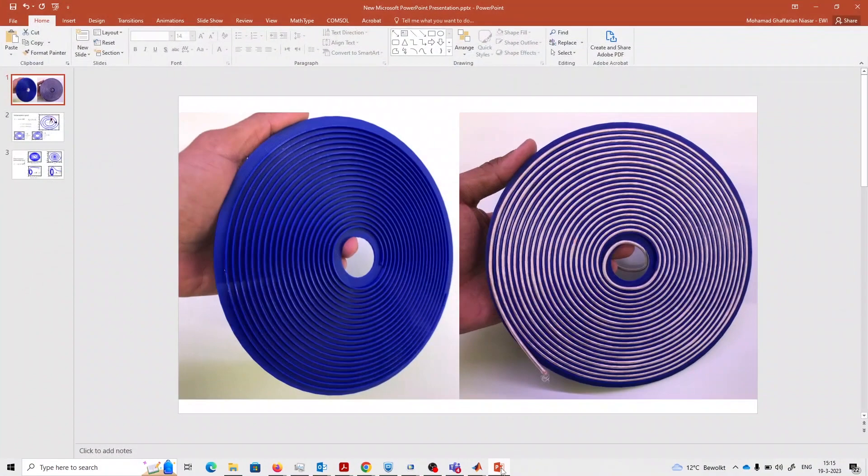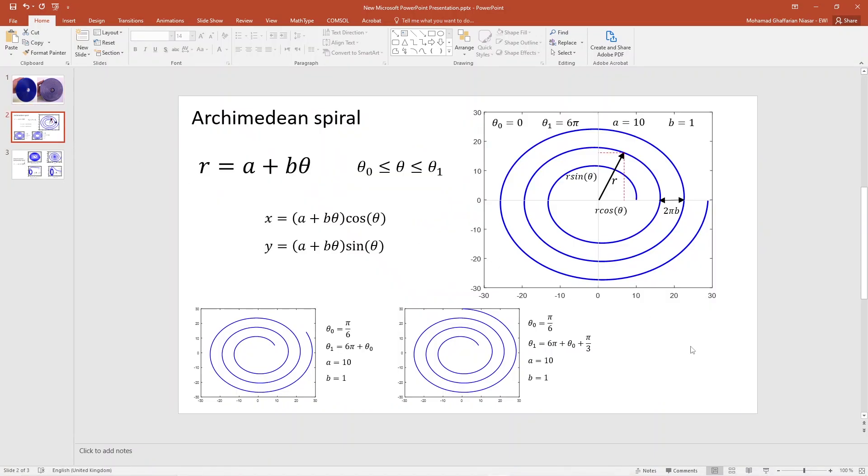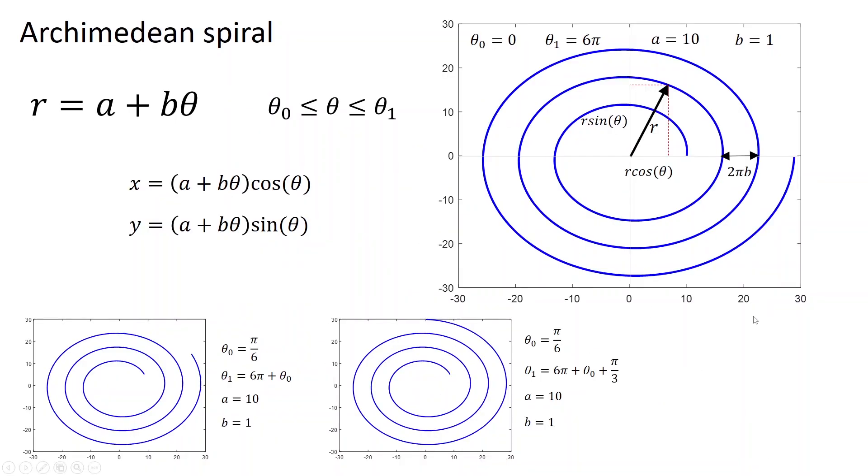I summarized the information in those web pages in these slides. The very famous spiral is called Archimedean spiral. And the equation of the spiral is r = a + bθ. So theta is the angle. It can start from any number to another number.